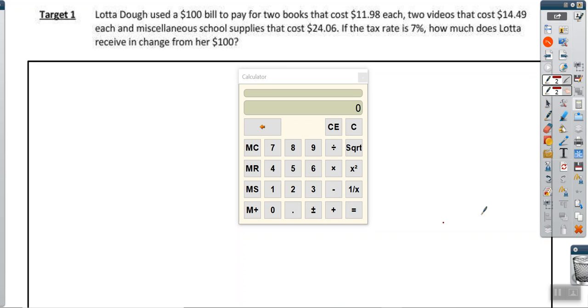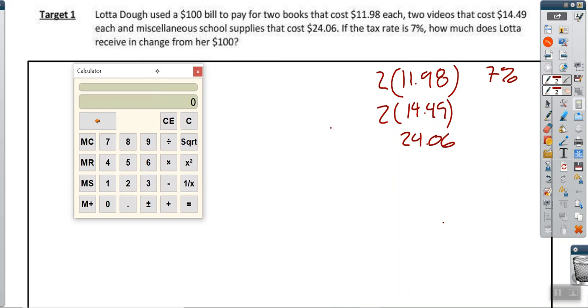Lotta Dough used a hundred dollars to pay for two books that cost eleven ninety-eight each, so that's times two, two videos that cost fourteen forty-nine and some miscellaneous supplies at twenty-four oh six. The tax rate is seven percent. How much did she get back from her one hundred dollars?